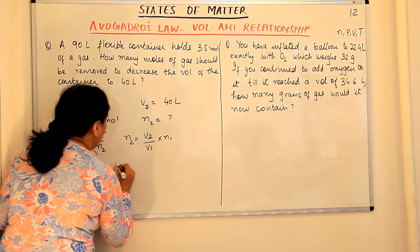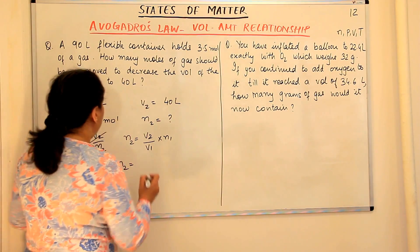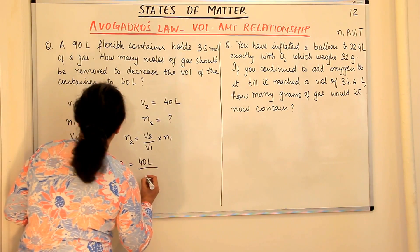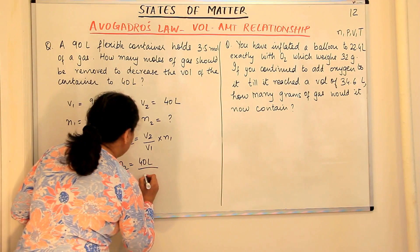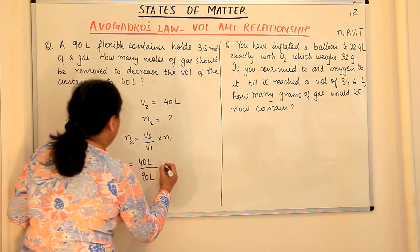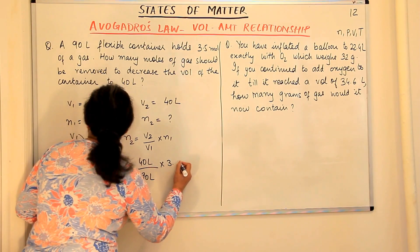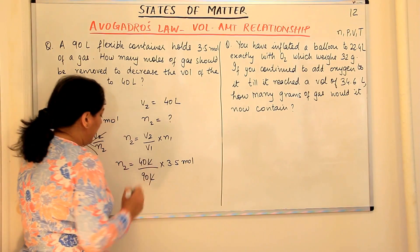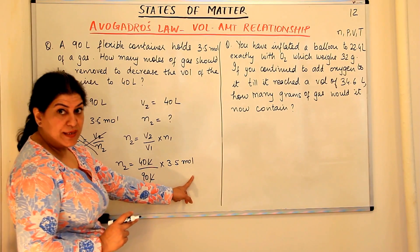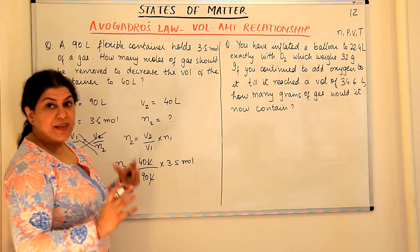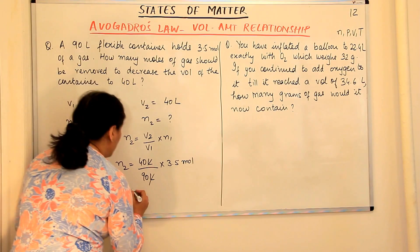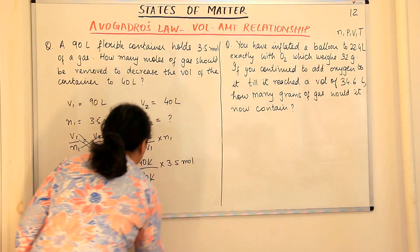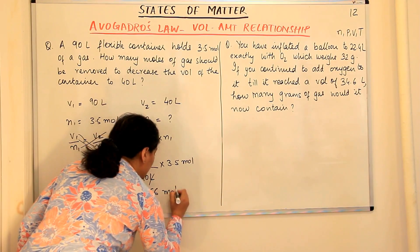Substituting the values: N₂ = (40 liters / 90 liters) × 3.5 mol. Liters and liters cancel, leaving the answer in moles. Solving this gives N₂ = 1.56 moles.